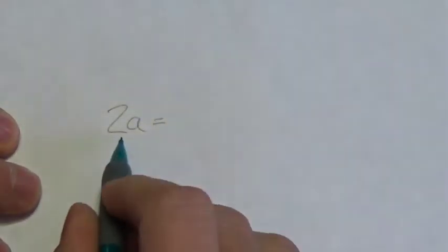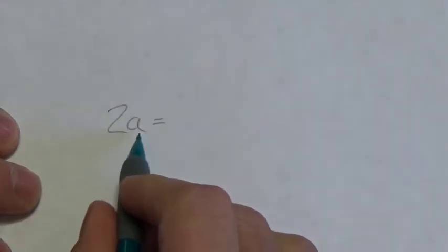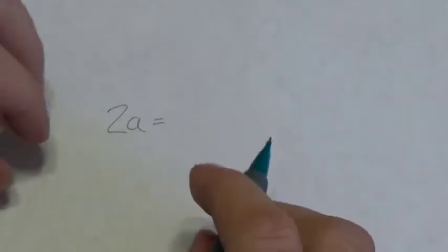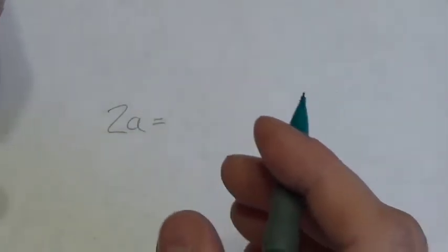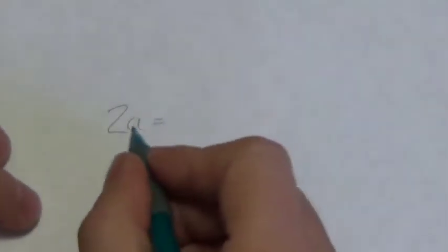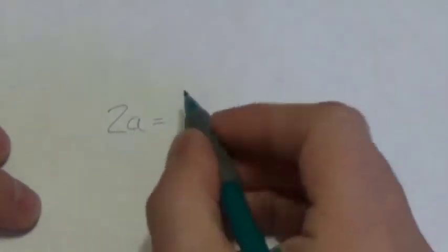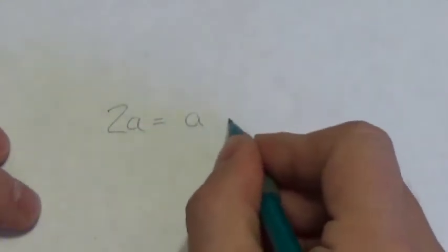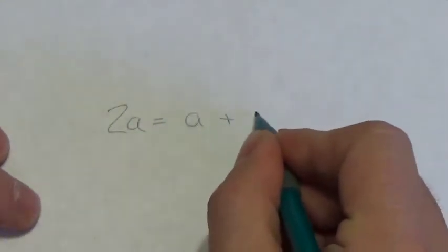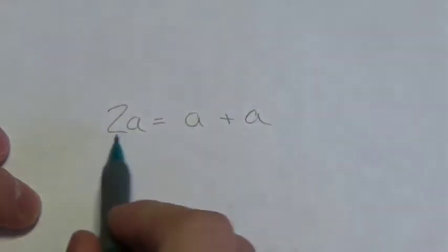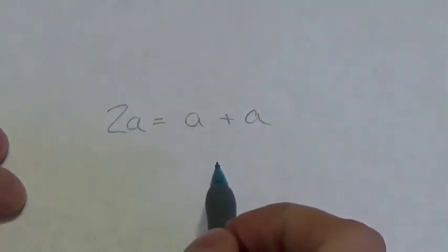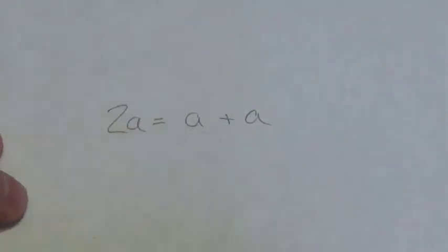So, we know that when I write 2 multiplied by A, multiplication is a nice way of fast-tracking addition. We know that 2 times A is equal to A plus A — two A's — and this is just a fast way of writing that.